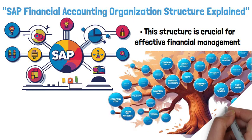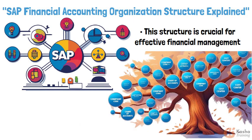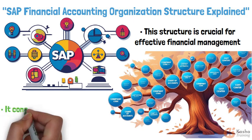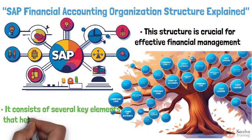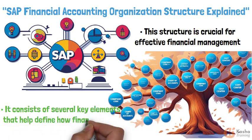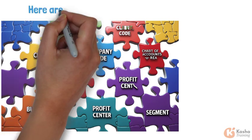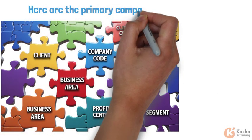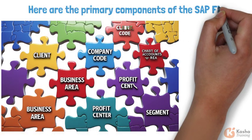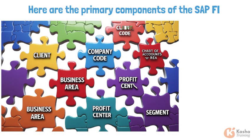The organizational structure in SAP Financial Accounting, or FA, is fundamental for managing financial transactions. It consists of several key elements that help define how financial data is organized and reported. Here are the primary components of the SAP FA organizational structure.